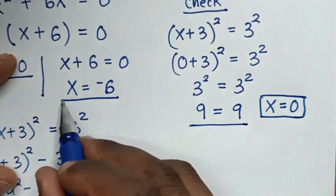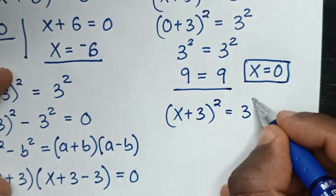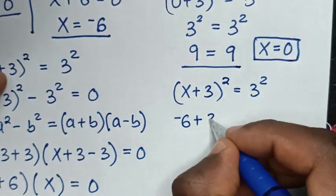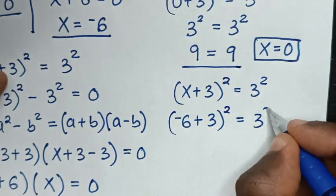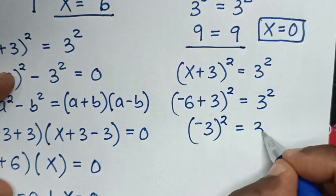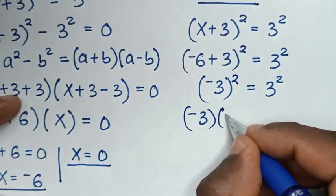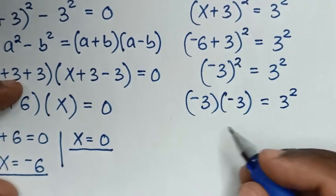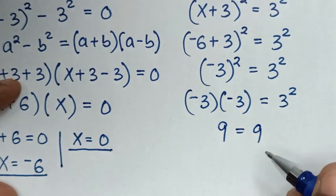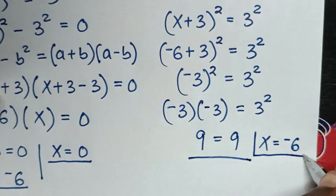Now let's check for x = −6. Substituting into (x + 3)² = 3²: (−6 + 3)² = 3², so (−3)² = 3². Negative 3 times negative 3 is positive 9, equal to 3² which is 9. Left side equals right side, so it is true for x = −6, the second value of x.